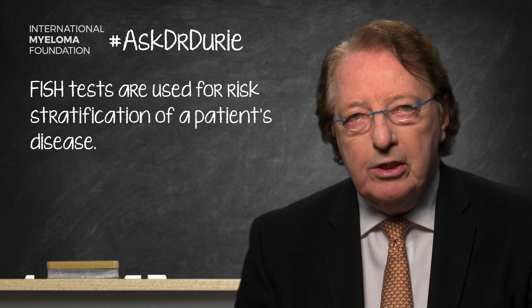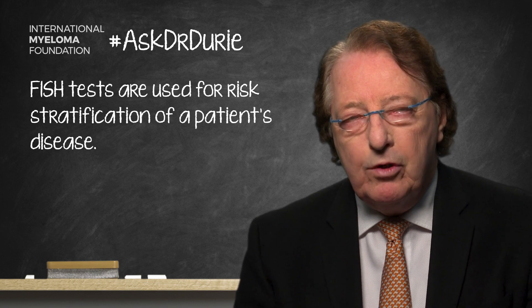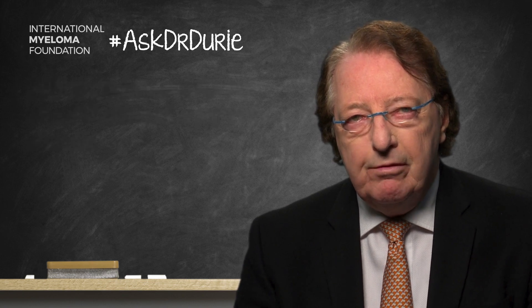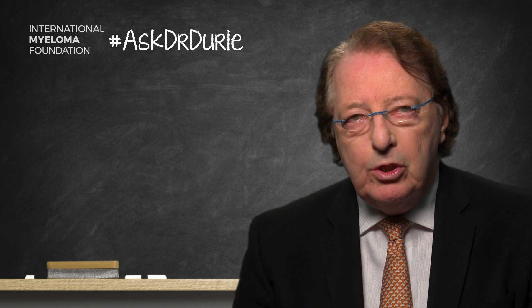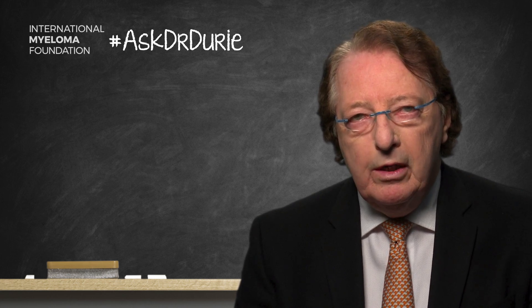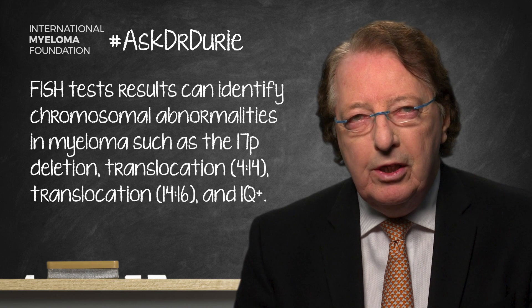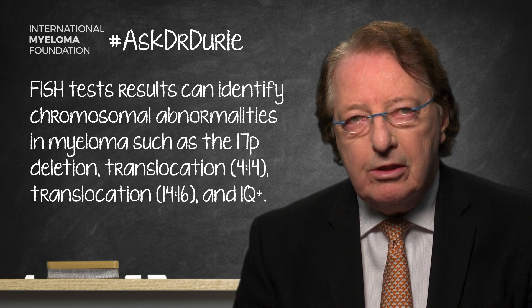Using this technique, FISH testing can be used to perform what is called risk stratification. One can look for changes such as a loss of the top of chromosome number 17, which is called 17p-. One can look for a switch between chromosomes 4 and 14, called translocation 4;14, similarly for translocation 14;16. One can also look to see if there is extra DNA on the bottom part of chromosome number 1, which is called 1Q+. This is a routine testing technique used to risk stratify myeloma based on the bone marrow myeloma cell results.